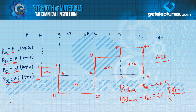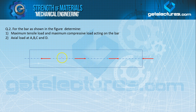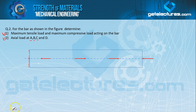Now let us enter into a different type of question — the second type. In this question: for the bar as shown in the figure, determine maximum tensile load and maximum compressive load acting on the bar, and also axial loads at A, B, C, and D. This point is A and this is a fixed end. The points are A, B, C, D, and E.